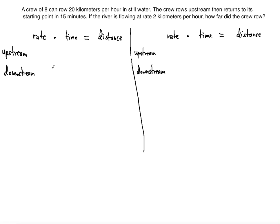The first way is to use hours instead of minutes, because the given rate is in kilometers per hour. The number 8 is redundant — we don't need it in the math. 20 km per hour is the still water speed, meaning relative to the ground, when the crew rows their boat, they reach 20 km per hour in still water.